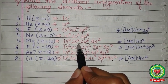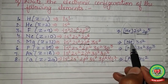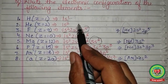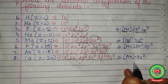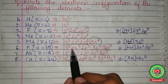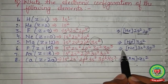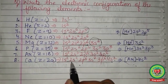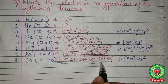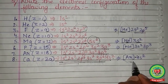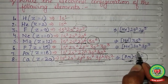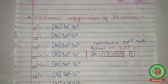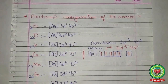An alternative way to write electronic configuration uses the nearest noble gas. For fluorine (1s² 2s² 2p⁵), since helium comes before it, we write [He] 2s² 2p⁵. For phosphorus, we write [Ne] 3s² 3p³. For calcium, since the configuration up to 3p⁶ matches argon, we write [Ar] 4s². Both notations are acceptable.